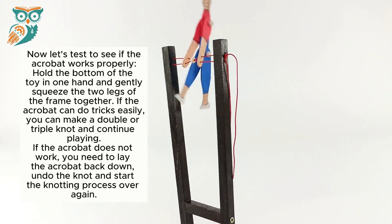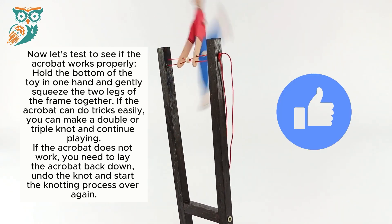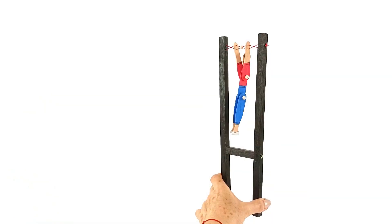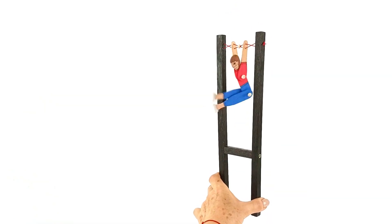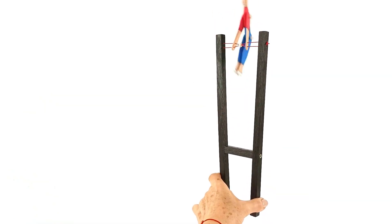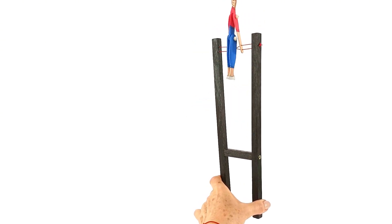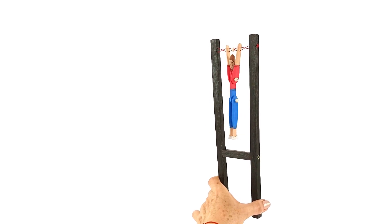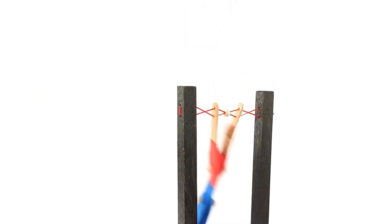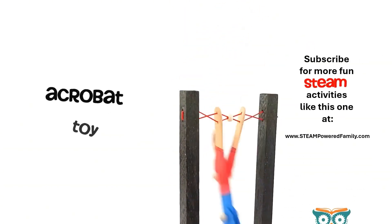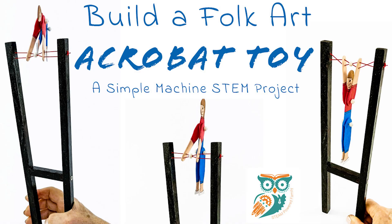Now just grab the bottom of your frame and squeeze and your acrobat should dance. If you have any issues with it, you can check our troubleshooting video to see how you can fix your acrobat and get him dancing. There's also the science explanation of how this simple machine works, which is exactly what this project is. If you want to learn more about STEM activities and educational resources, visit steampoweredfamily.com. Have fun! Bye for now!